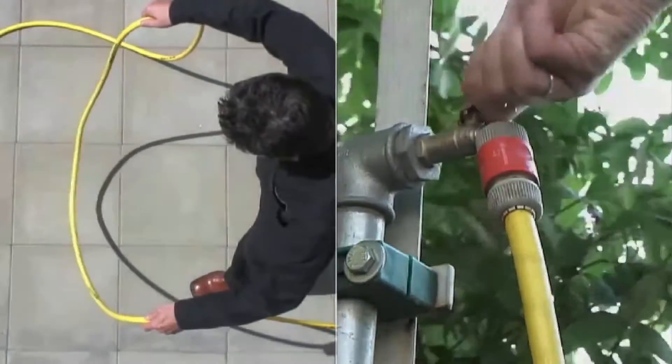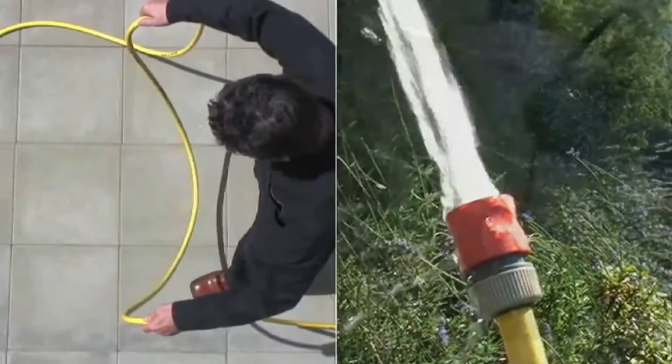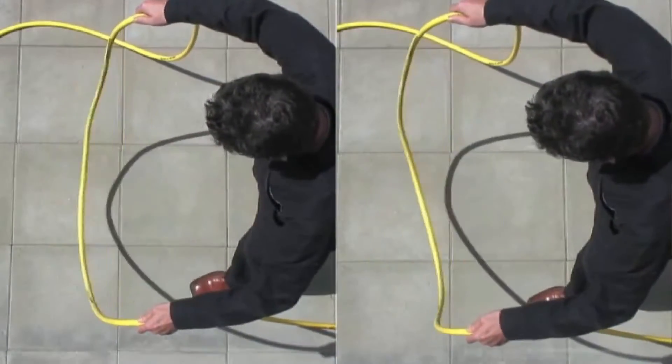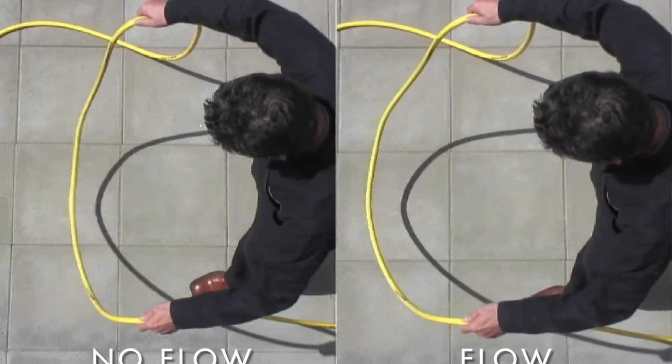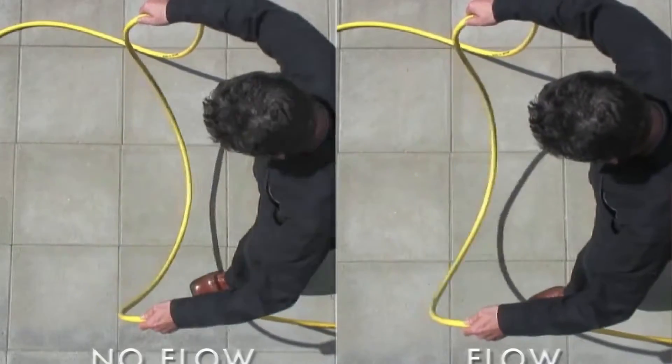But when a water flow is turned on, the water is forced through the swinging hose. The hose twists as a result of the changing angular velocity in the curved hose. That's the Coriolis effect in action.